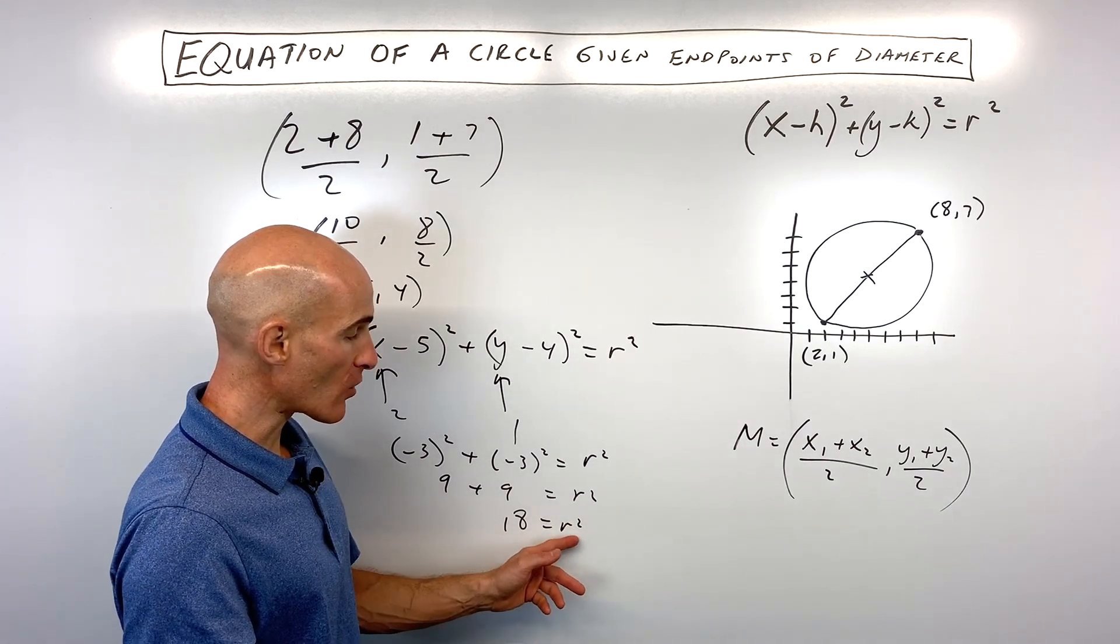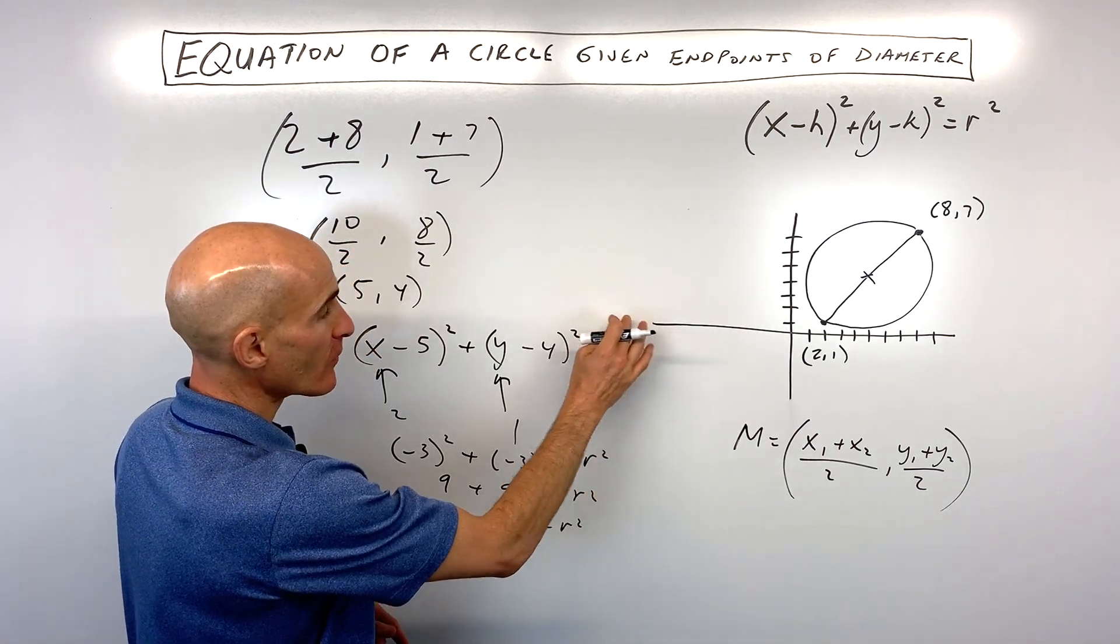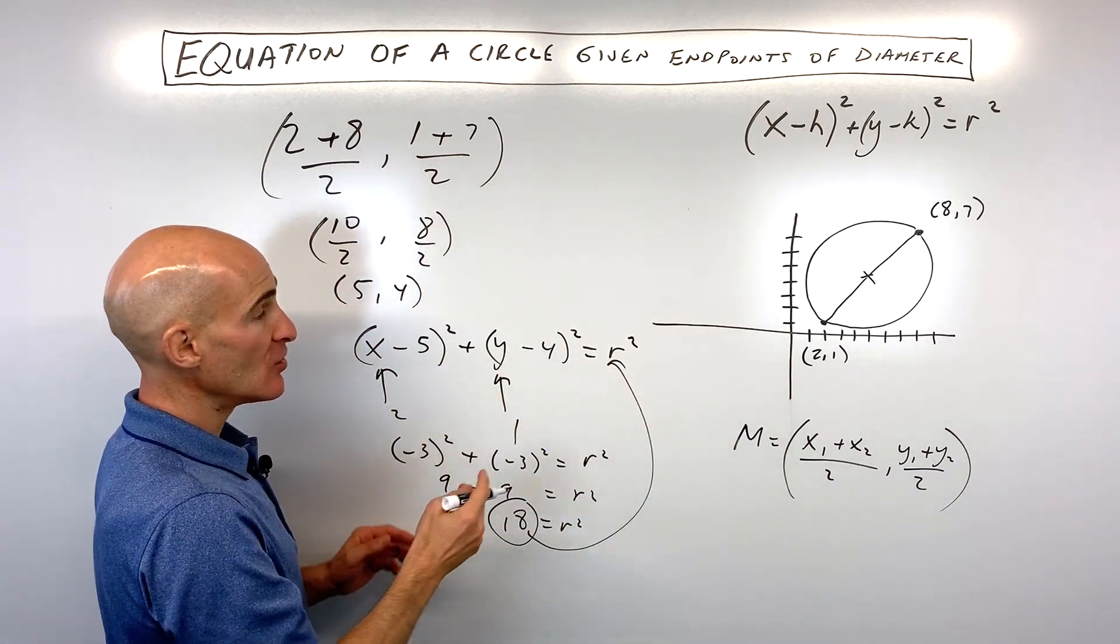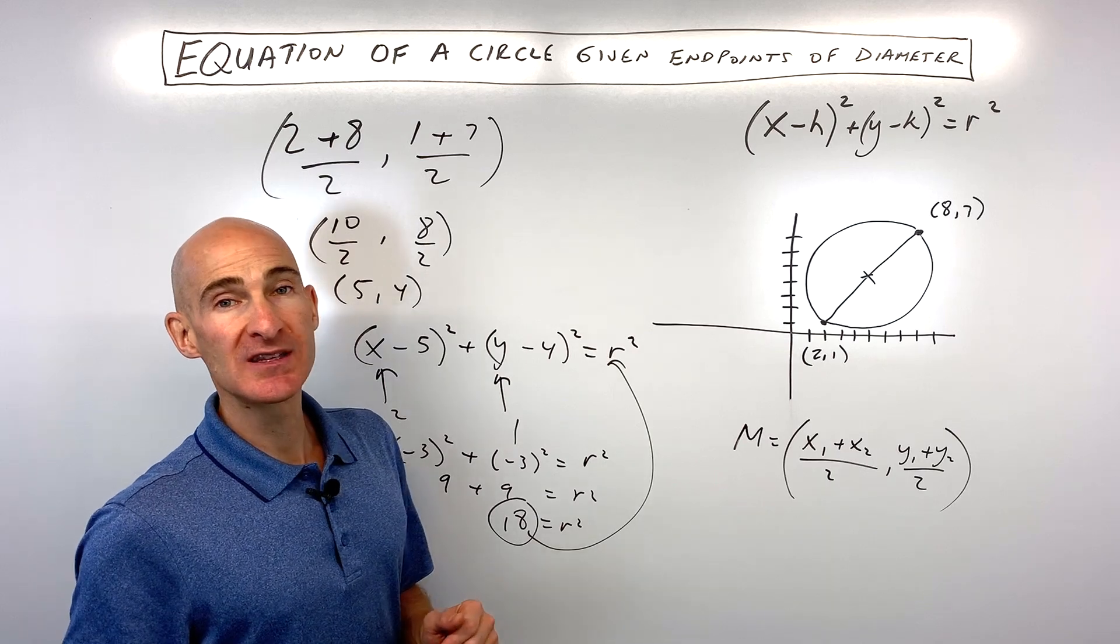Now you don't need to take the square root of both sides because we're actually looking for R squared. So let's go ahead and just put that in for R squared, and you've got the equation of your circle in standard form.